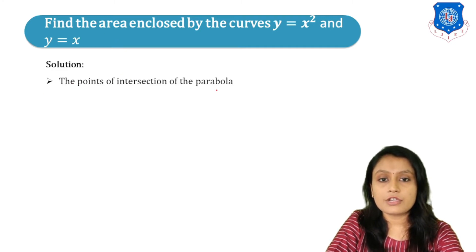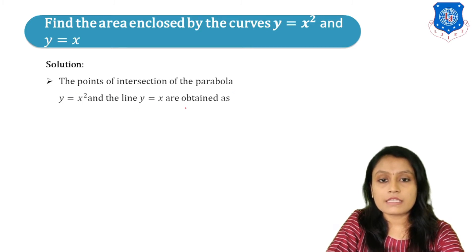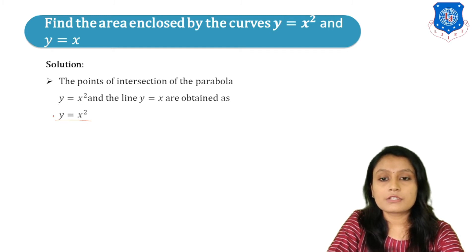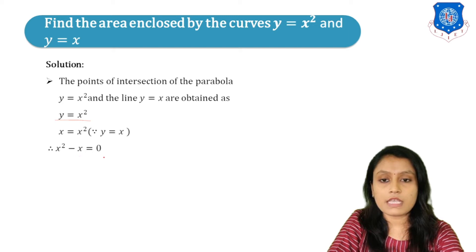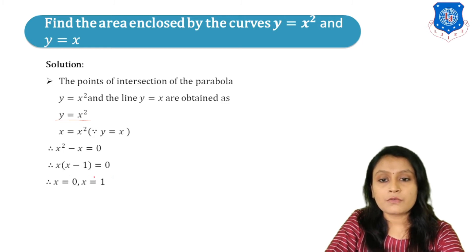This is an example in Cartesian coordinates. The points of intersection of the parabola Y equals X squared and the line Y equals X are found by substituting Y equals X into the parabola: X equals X squared, giving X squared minus X equals 0, so X(X minus 1) equals 0. Therefore X equals 0 and X equals 1.